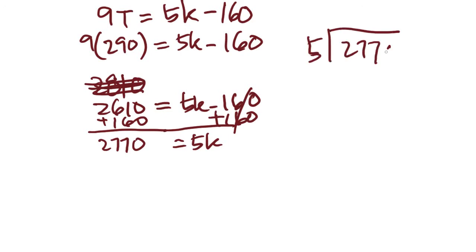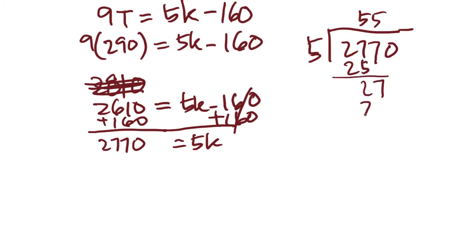So 2770 divided by 5: 5 goes into 27 five times, giving us 554. That is answer choice D.